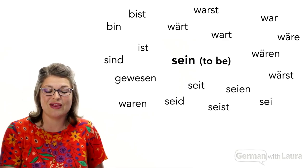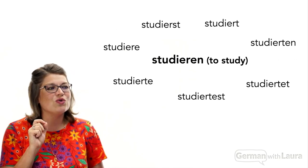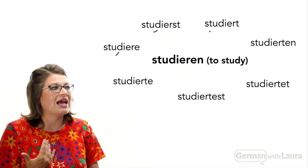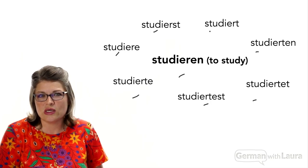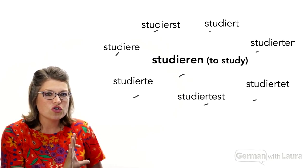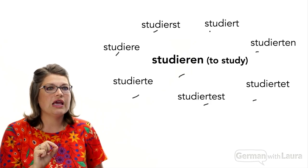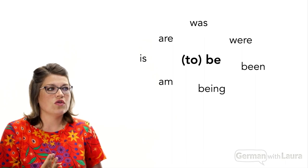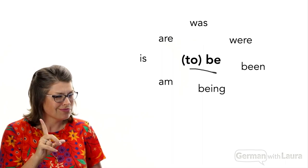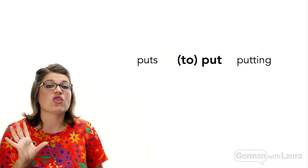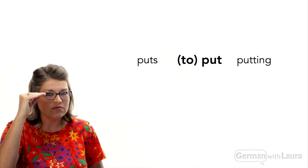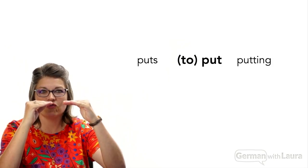Before we get started with that formula, consider the verb studieren — another German verb meaning 'to study.' We can quickly see that these eight different variants are all related to each other, unlike sein. We have eight different versions of this easiest type of verb in German. Compare that to English, where even our most difficult verb 'to be' has eight versions, and a regular verb might simply have three.